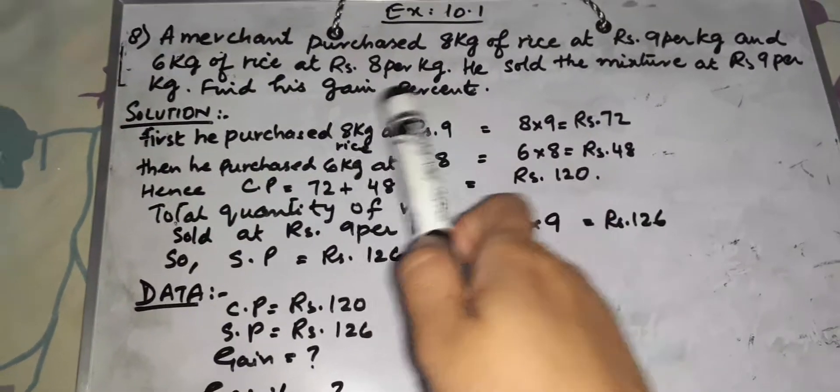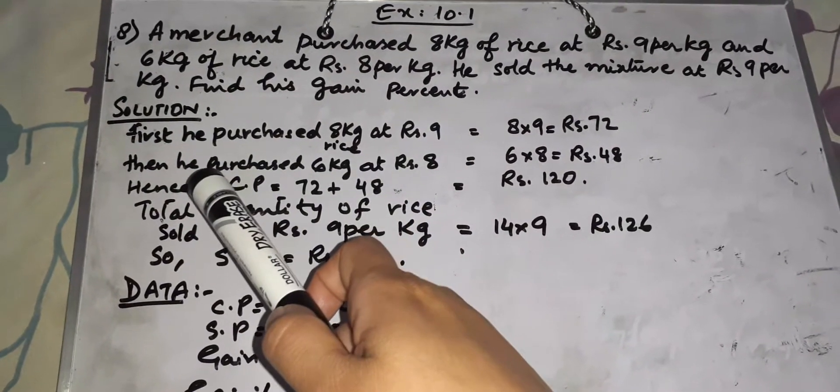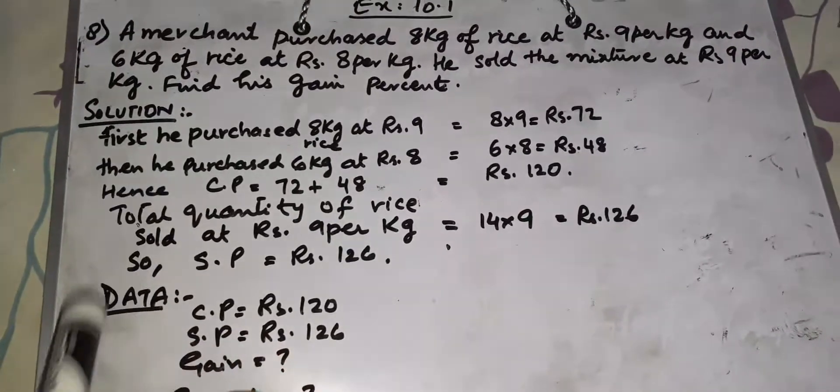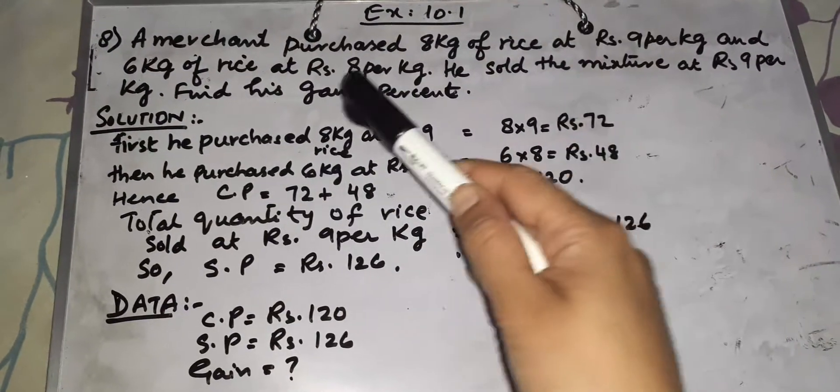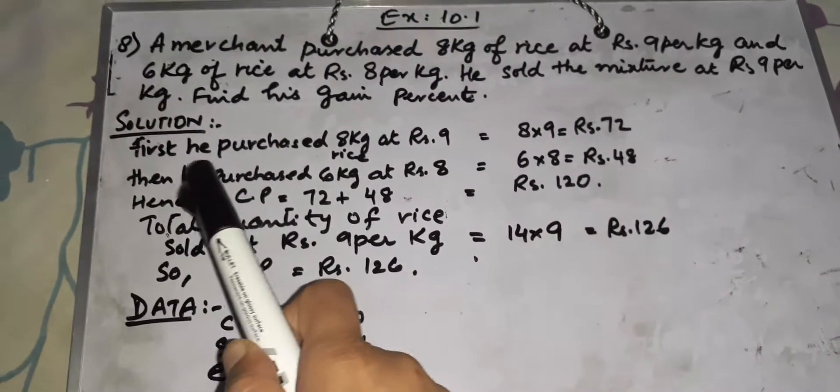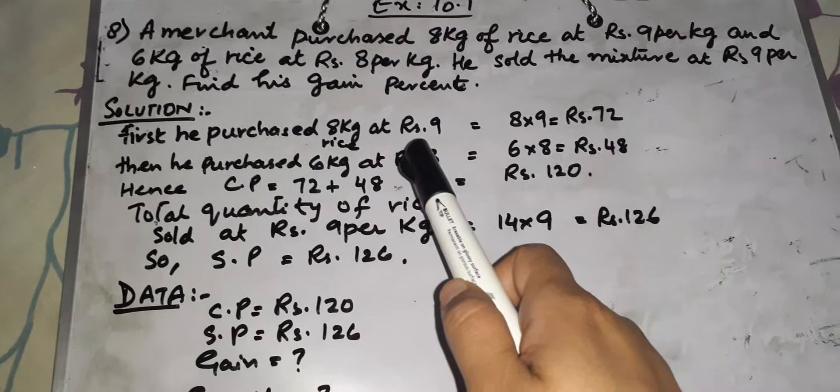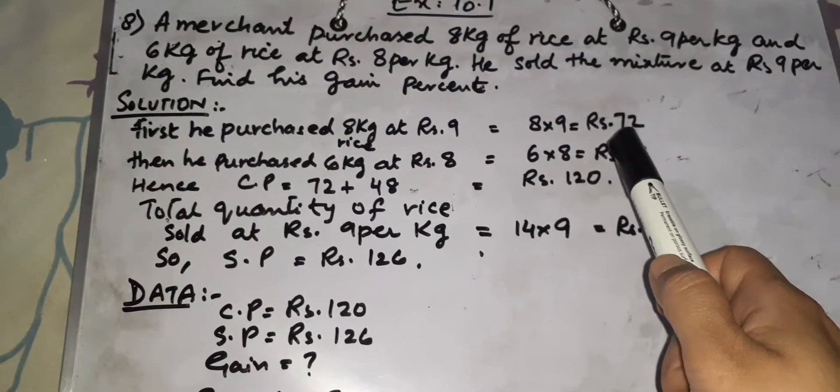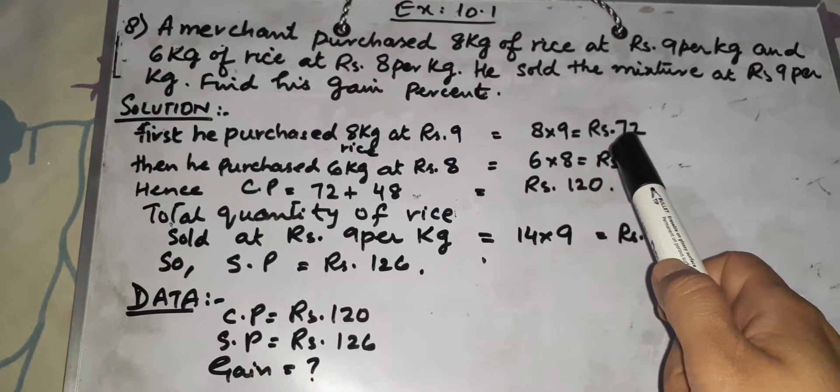Find his gain percent. First we have to calculate the cost price and selling price. First he purchased 8 kg at Rs. 9, so 8 × 9 = Rs. 72.